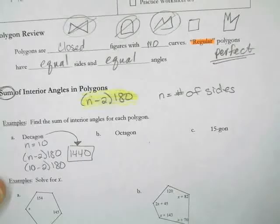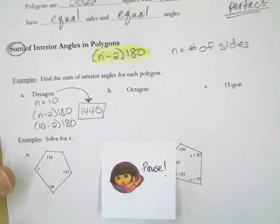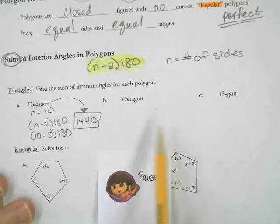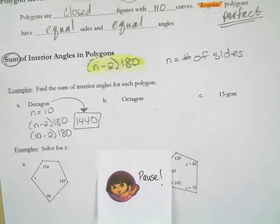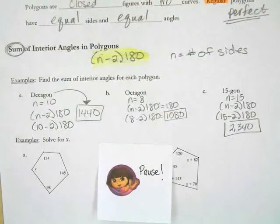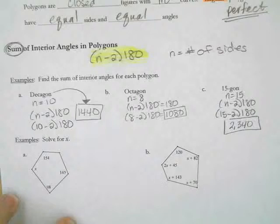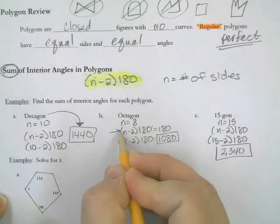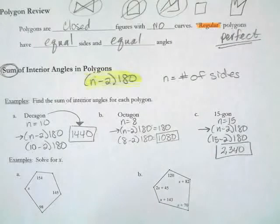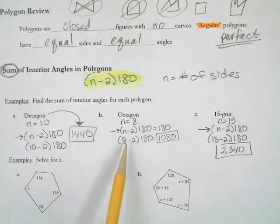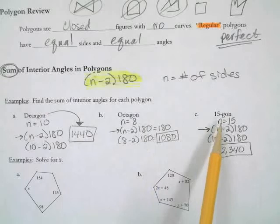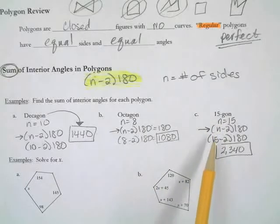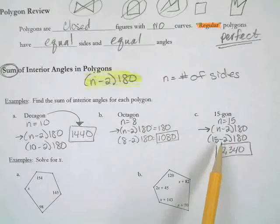Pause the video to make sure you have all the notes written down, and try B and C. For an octagon, it has 8 sides: 8 minus 2 is 6, and 6 times 180 is 1,080. So the eight angles in an octagon add up to 1,080. For a 15-gon, it has 15 sides: 15 minus 2 times 180 — 15 minus 2 is 13, and 13 times 180 is 2,340.